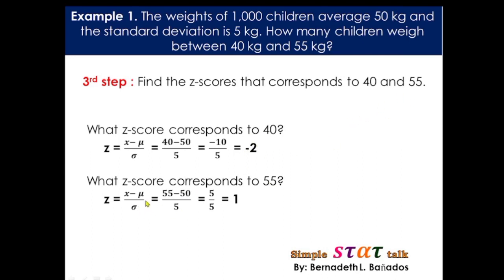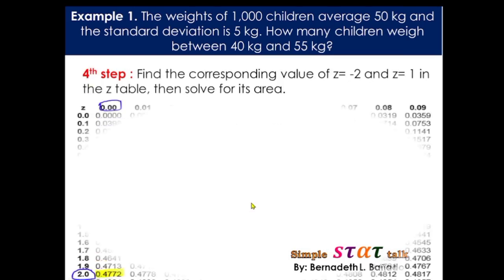And then, for 55, we just substitute the values here. X should be 55 since ito yung raw score natin. Minus 50, and then 5 is the standard deviation. 55 minus 50, that is 5. Divided by 5, that is equal to positive 1. Still, this value is true kung titignan natin doon sa graph natin kanina. So, 40, the equivalent z-score for 40 is negative 2. And the equivalent z-score for 55 is 1. So, we can now look for its area in the z-table.